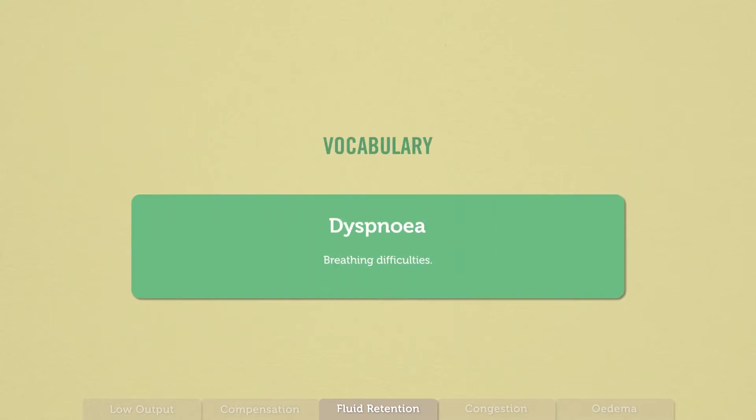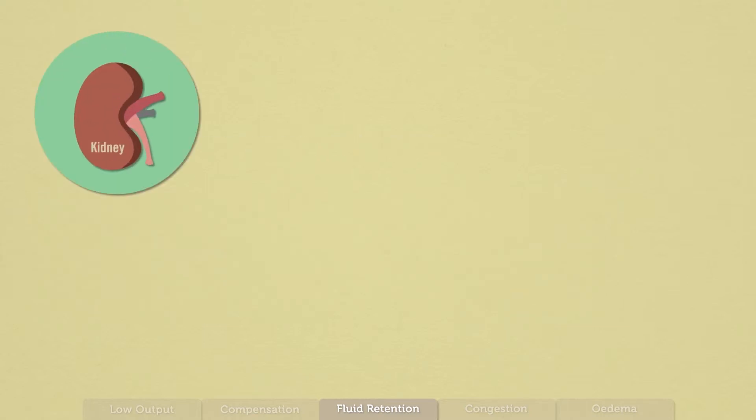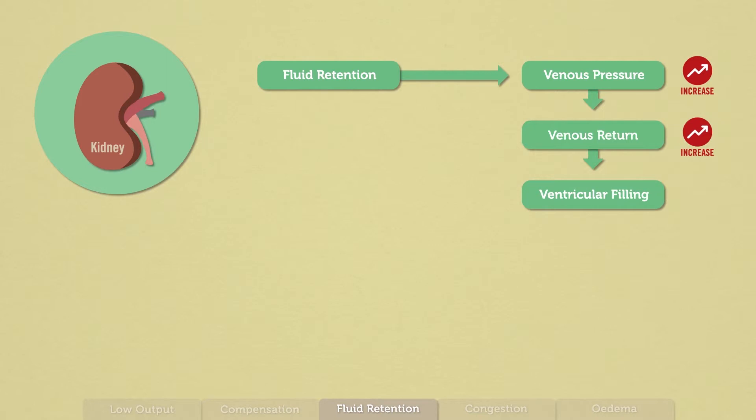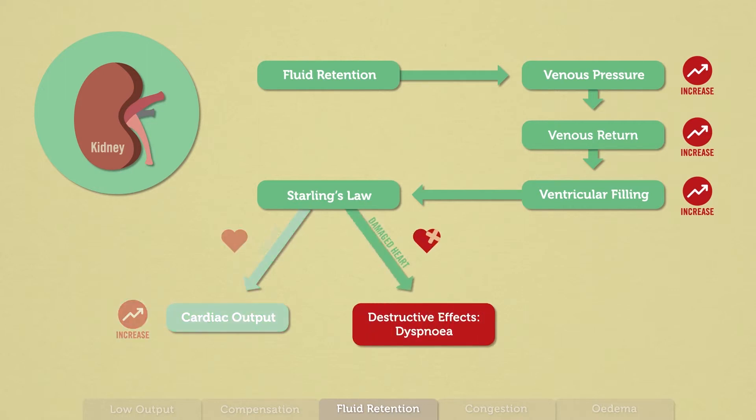Breathing difficulties, or dyspnea, occur when the fluid retention builds up in the lungs. That sounds bad. I thought you were trying to tell me that the compensation and fluid retention were good. Not when the heart is damaged. The way it works is that fluid retention increases central venous pressure, which increases venous return. What is venous return, and why does it help my heart pump more blood? Venous return is the amount of blood that returns from the veins into the right side of the heart each heartbeat, and venous return directly determines the amount of ventricular filling that occurs during diastole. In a healthy heart, Starling's Law means that this increased filling leads to increased stroke volume and thus to increased cardiac output.